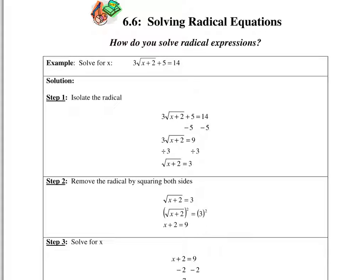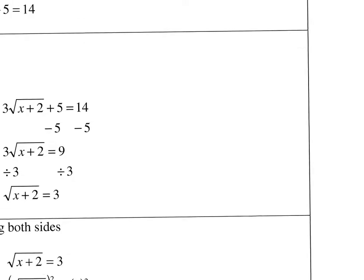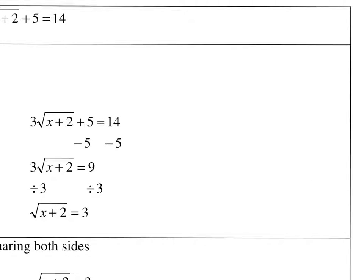The equation is 3 times the square root of x plus 2, plus 5, equals 14. We're solving for x, which means we need to isolate x to find out what x can equal to make this a true statement. I'm going to work it out so we can see what's happening. There are just a few rules to remember: you need to isolate the radical expression — get rid of the plus 5 and the times 3 — because we know how to get rid of a radical when it's by itself.